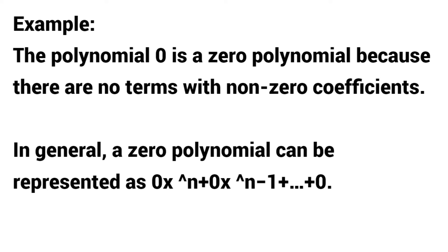In general, a zero polynomial can be represented as 0x^n + 0x^(n-1) + ... + 0.